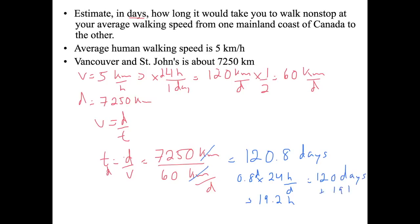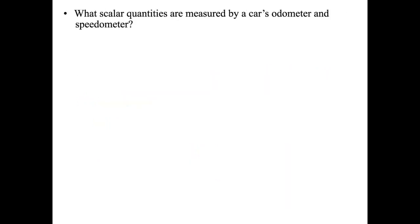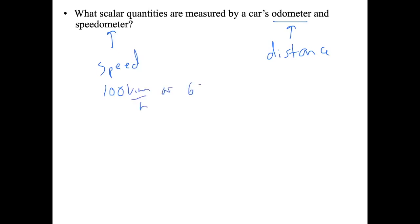What scalar quantities are measured by your car's odometer and speedometer? An odometer measures distance, and the speedometer measures speed — for instance, 100 kilometers per hour or 60 miles per hour.